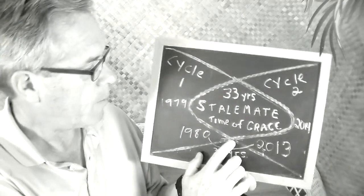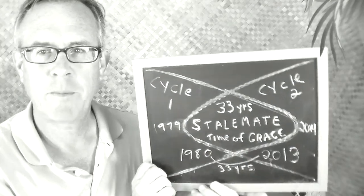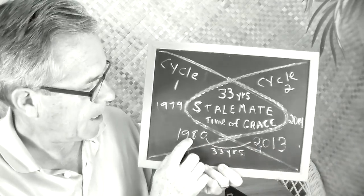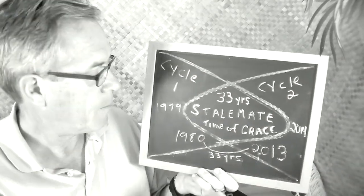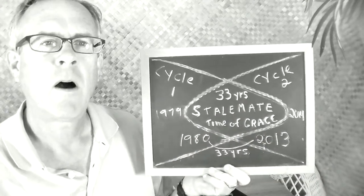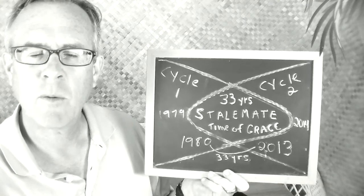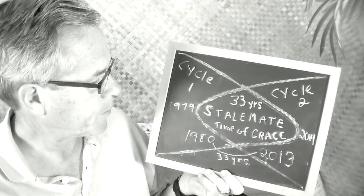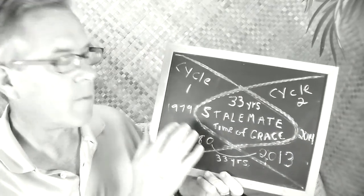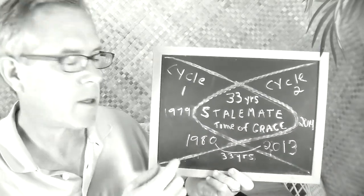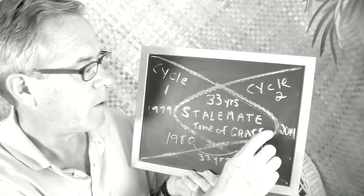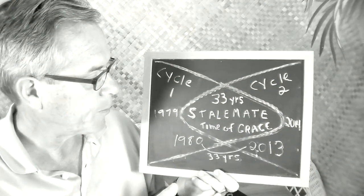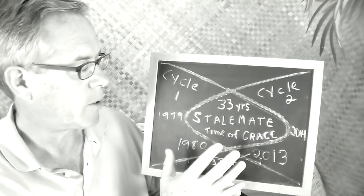Now, this overlap where the cycles overlap is very interesting. It's a 33-year period — this is what hindsight has shown us — from 1980 through 2013. I believe it really started in October of 1979. There was a build-up to it, a one-year node period, and there's going to be a one-year node period at the other end. But let's just say 1980 through 2013: 33 years of overlapping.